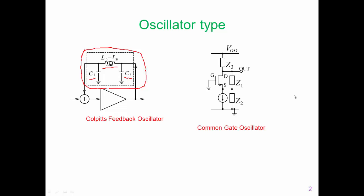Now we want to marry that Colpitts oscillator with a common gate configuration. The common gate configuration is shown here. It's fairly easy to see that this is a common gate, and if we replace the MOSFET by a BJT, we would call it a common base, but it's the same circuit.